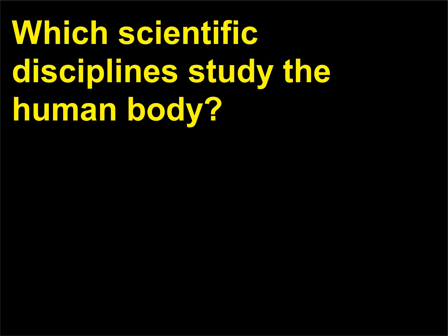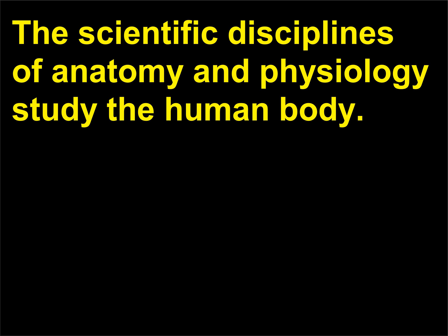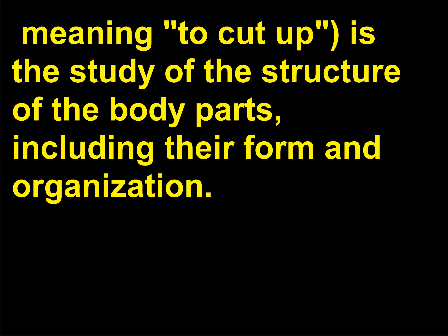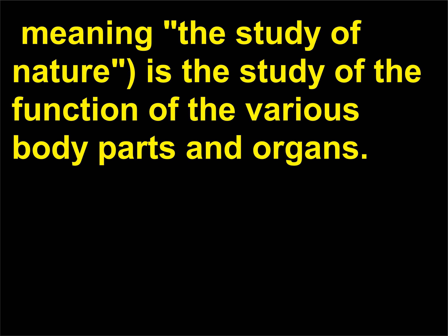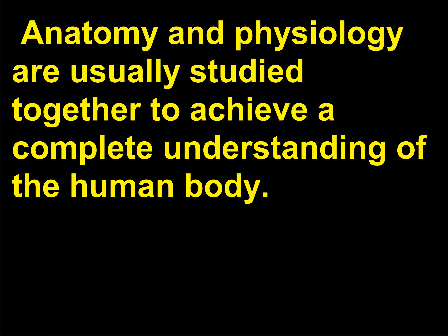Which scientific disciplines study the human body? The scientific disciplines of anatomy and physiology study the human body. Anatomy, from the Greek ana and temnion meaning to cut up, is the study of the structure of the body parts, including their form and organization. Physiology, from the Latin meaning the study of nature, is the study of the function of the various body parts and organs. Anatomy and physiology are usually studied together to achieve a complete understanding of the human body.